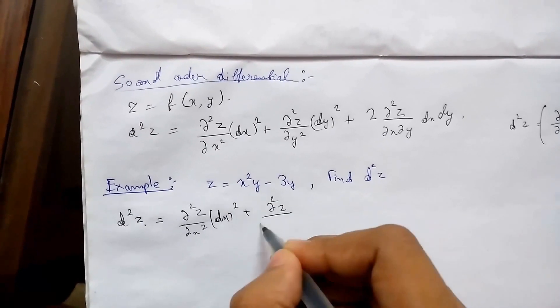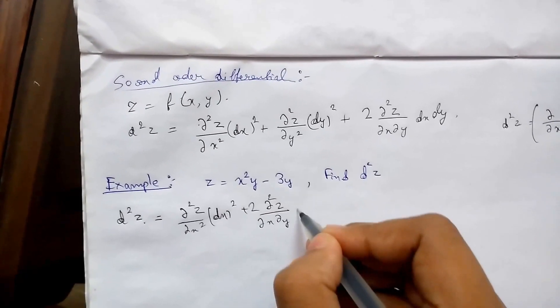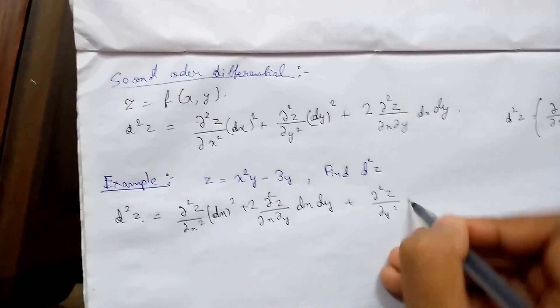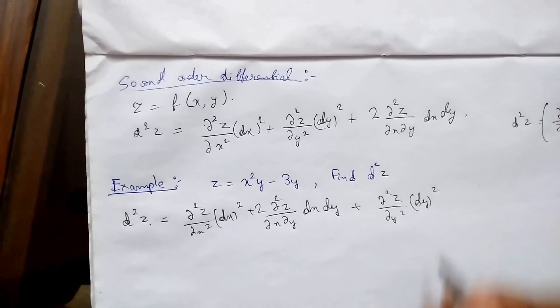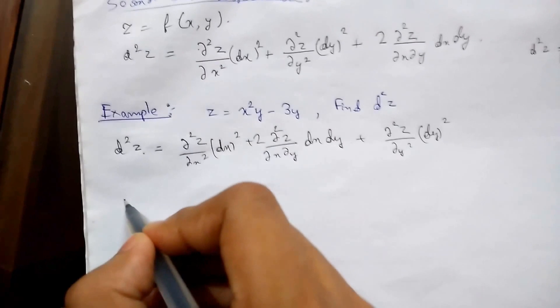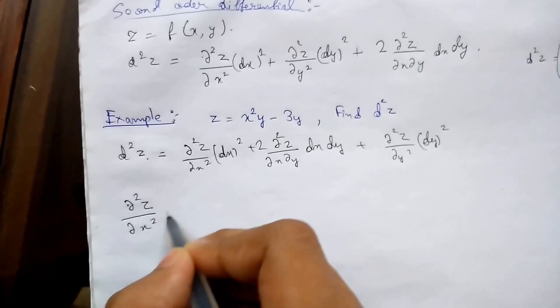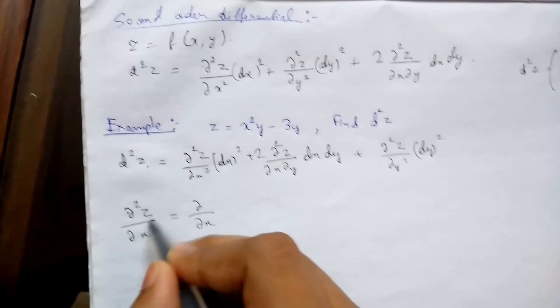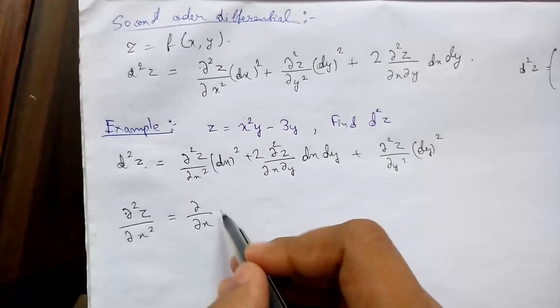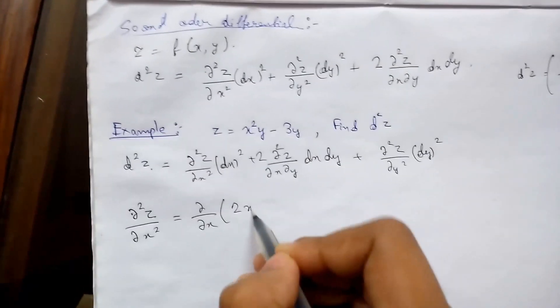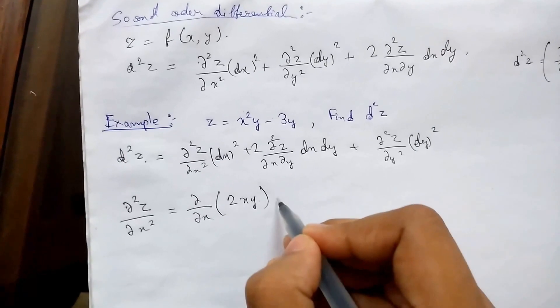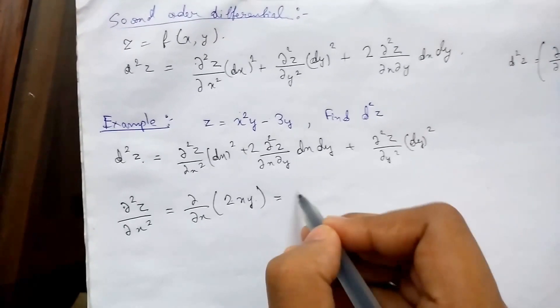So first we need to differentiate this with respect to x. Differentiating this we get 2xy and this will be 0. Now we will differentiate this again with respect to x keeping y constant. This will be 2y.